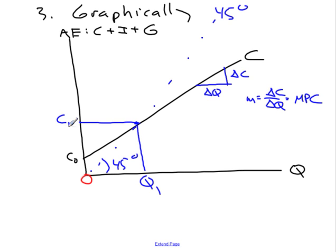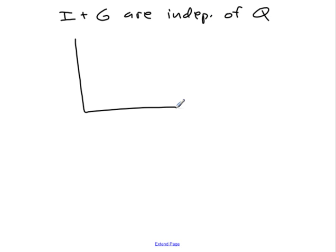That's not terribly interesting in itself, but it becomes more interesting if we add a couple new things. So let's look here. Let's say that investment and government spending are independent of Q.